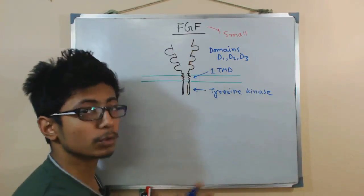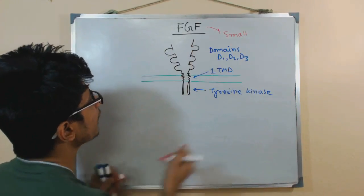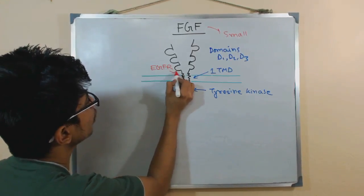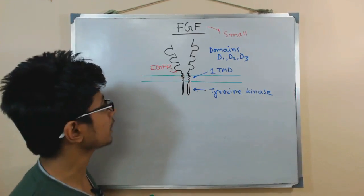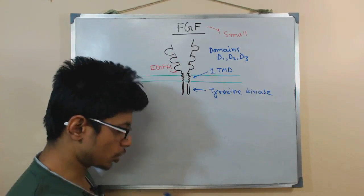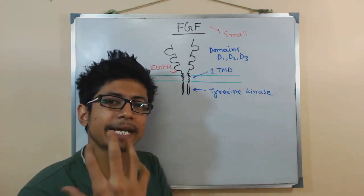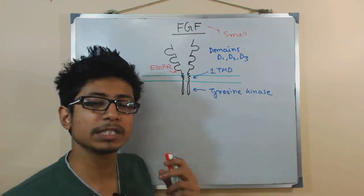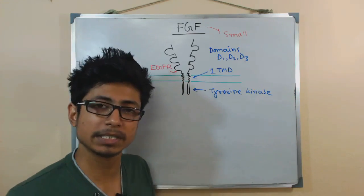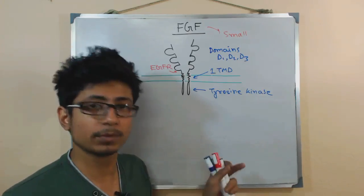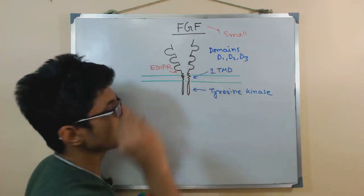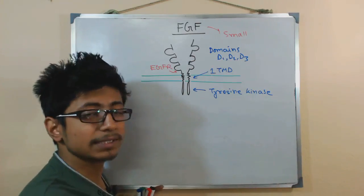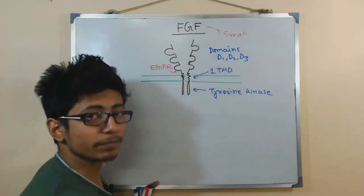This is the structure for the fibroblast growth factor receptor, embedded in the cell membrane. The extracellular domain is responsible for interacting with the signaling molecule, fibroblast growth factor, as well as with heparin sulfate residues present in the extracellular matrix of the cell. It interacts with heparin sulfate residues and heparin from the extracellular matrix, and also interacts with fibroblast growth factor.